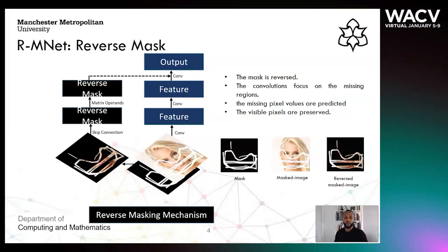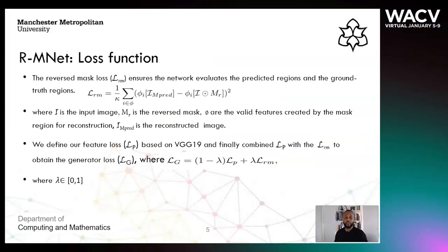Thus forcing the convolutions to focus on predictions of the missing regions. To compute the reverse mask loss with access to the reverse mask mechanism, we concatenate the mask to the final output of the network. The reverse mask loss via backward pass ensures that the network focuses on predictions of the missing regions, yielding predictions that are consistent with the entire image. We use the spatial preserving operator to gain access to the mask image. We define the reverse mask loss using the mean square error space. We ensure that our reverse mask loss targets the devalued features created by the mask during reconstruction.